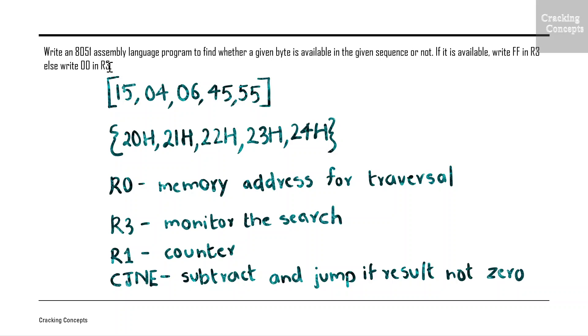For solving this question, we will assume a sequence of 5 bytes: 15, 4, 6, 45 and 55, which is stored at consecutive memory locations 20H, 21H, 22H, 23H and 24H. We will use 3 registers here: R0 for memory address traversal, R3 for monitoring the search as given in the question, and R1 as counter.